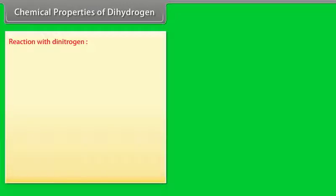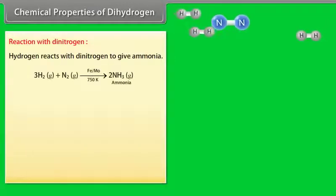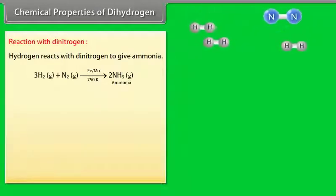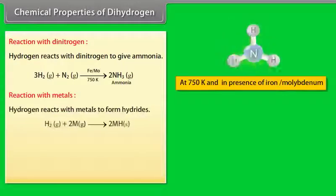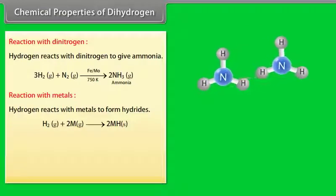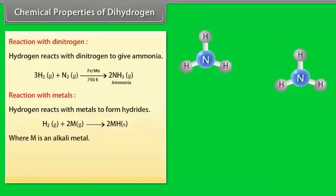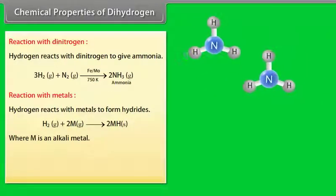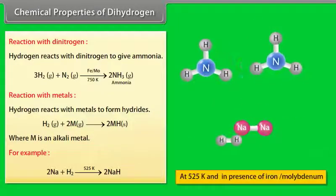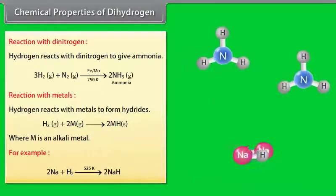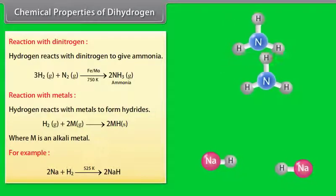Chemical properties of dihydrogen. Reaction with dinitrogen: Hydrogen reacts with dinitrogen to give ammonia. Reaction with metals: Hydrogen reacts with metals to form hydrides, where M is an alkali metal. For example, 2 Na plus H2 on temperature 525 Kelvin gives 2 NaH.